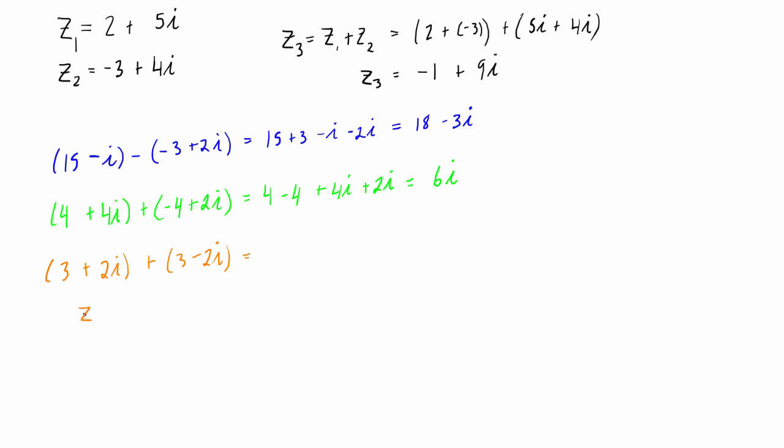And the notation, actually, if we called this z, then this would be called the conjugate with z with a little bar on top of it. Or conversely, if we called this one z, then the other one would be called the conjugate.